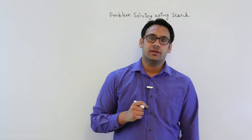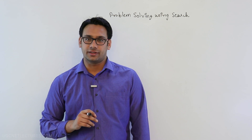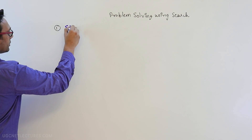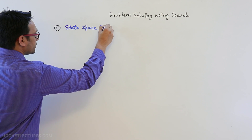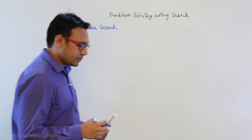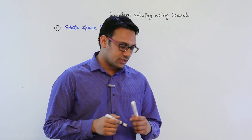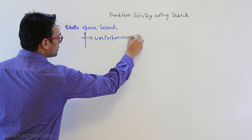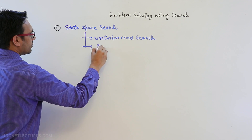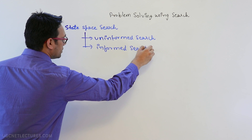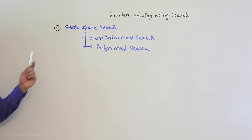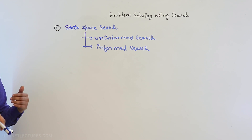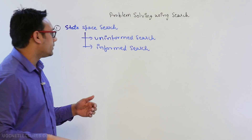Problem solving using search is divided into three or four different categories. The first category is solving the problem using state space, called state space search. State space search has two types: uninformed search and informed search. In state space search, we map real world problems into a state space and then use search algorithms to find the goal.